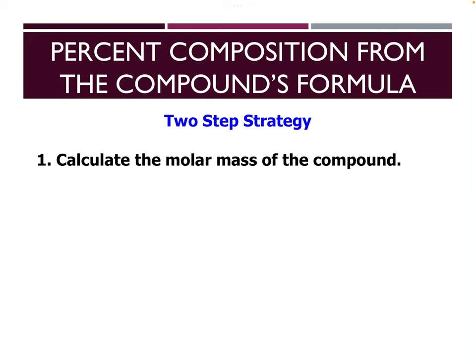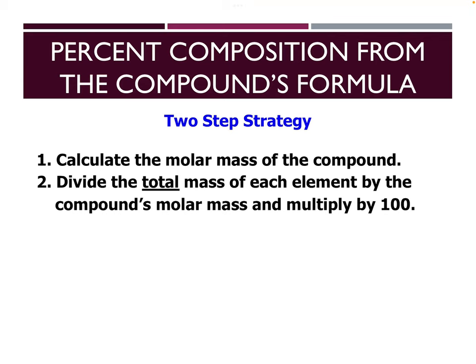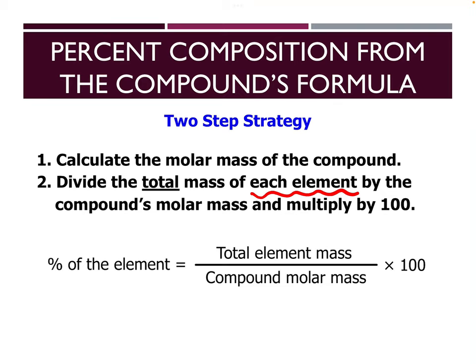Let's go through figuring out mass percent composition from the compound's formula. There are two steps: first, calculate the molar mass of your compound; second, divide the total mass of each element by the molar mass and multiply by 100 to get the mass percent. The formula is: element's total mass divided by the molar mass, times 100. The important thing is to use the total element mass — if looking for oxygen, use the total mass of all oxygen in that compound.